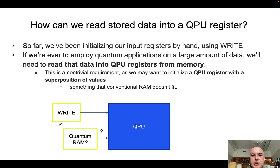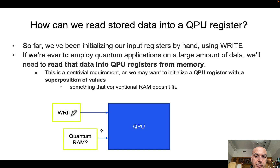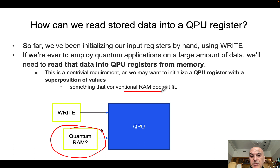So far we have been initializing our input register by hand by basically using the write QPU instruction. But we are limited to basically using classical data. If we have to develop a quantum application on a very large amount of data, for instance a machine learning application, we will need to read the data into the QPU registers from the memory. This is obviously not trivial, as we might want to initialize a QPU register with the superposition of values. So we will need a certain quantum technology, and this is something that the conventional RAM doesn't fit.